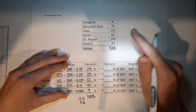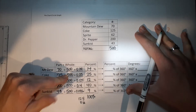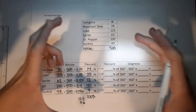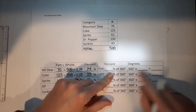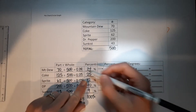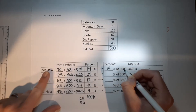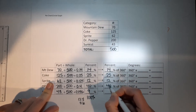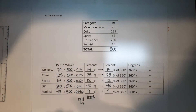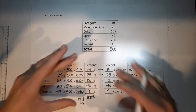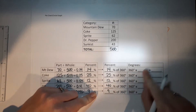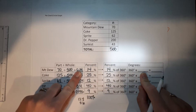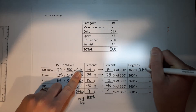We found the percentages, but we need degrees. We need to find each percent of 360, because our circle is measured in degrees. So: 14% of 360 gives Mountain Dew's degrees, 25% of 360 for Coke, 12% for Sprite, 40% for Dr Pepper, and 9% for Sunkissed. To figure out the degrees, multiply 360 by the decimal version of the percent — so 360 times 0.14.